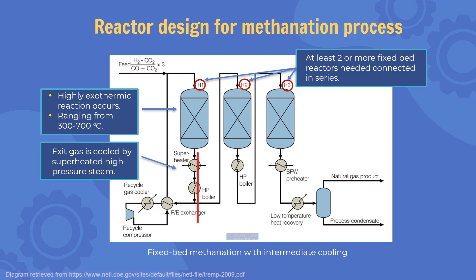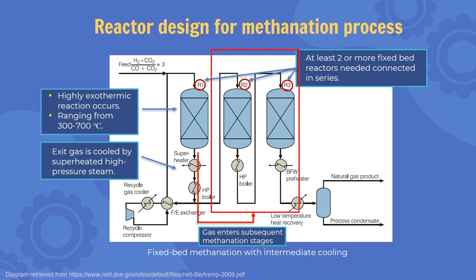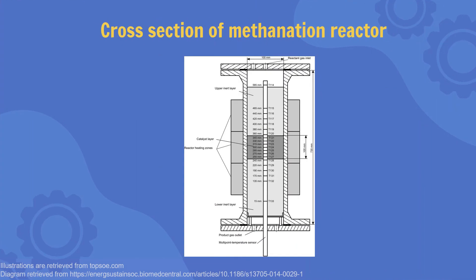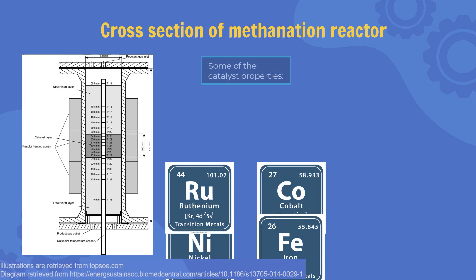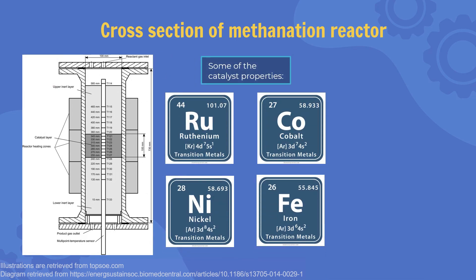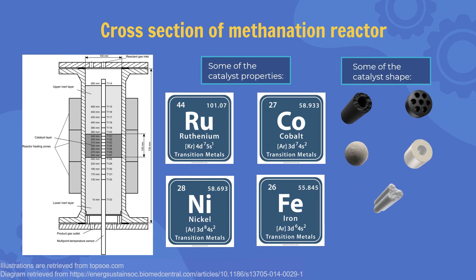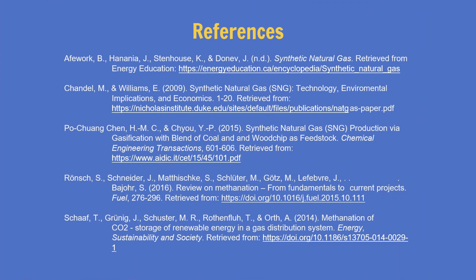The gas then enters the subsequent methanation stages, as shown in the figure. As you can see, methanation reactors use catalysts that can withstand high temperatures. These are examples of catalysts that we can use. The size and shape of the catalyst need to be adjusted based on the properties and parameters of the reactor used. To be continued.